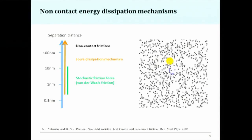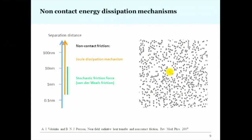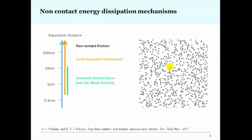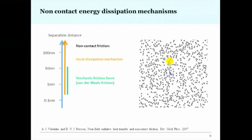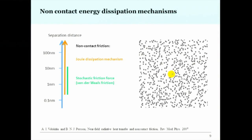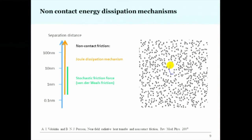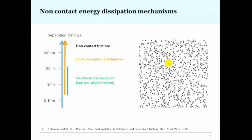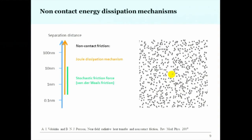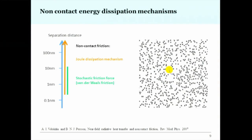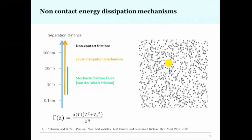If we go to closer distances — say, tens of nanometers — without Joule dissipation, we mostly deal with stochastic friction force, which arises from the interaction between tip and sample. An analogy is Brownian motion: a particle moves randomly and we cannot extract useful work from it, so the energy is lost.